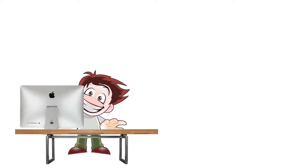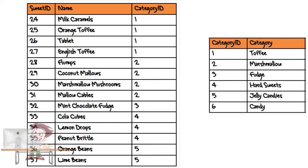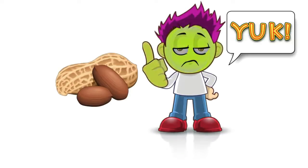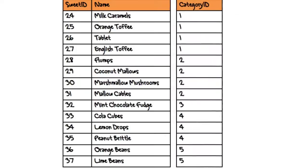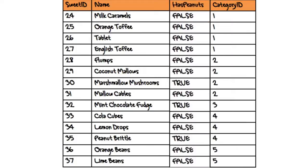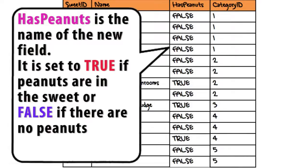Bob is adding some information to his linked tables. Some of his customers have an allergy to peanuts, so Bob can add a field to his sweet table to store if a sweet contains peanuts or not. This is a special type of field because it contains values which can only be true or false.